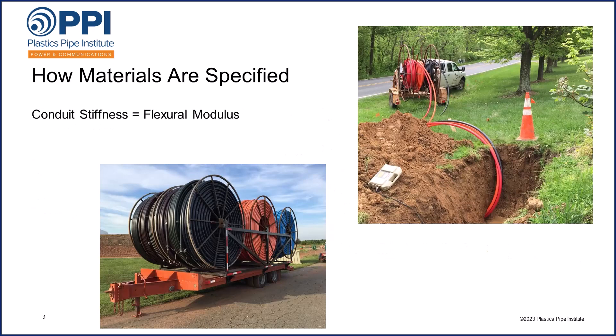For example, we need a certain amount of flexibility to be able to coil Conduit onto a reel, yet not too much, as the Conduit needs to maintain its round shape under soil pressure when buried. We need the right amount of material stiffness — a material property called flexural modulus — to meet both of these requirements.